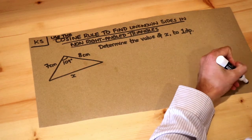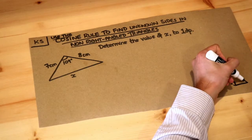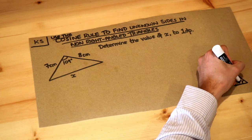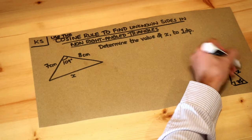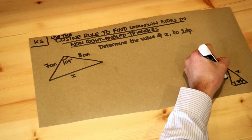Now remember, if we had a right-angle triangle and we had say an angle here of 70 degrees, and we had a side here of x, and we had a side here of say 3.